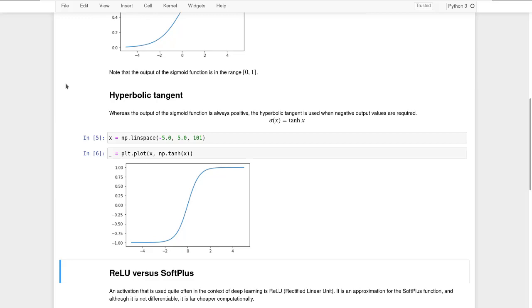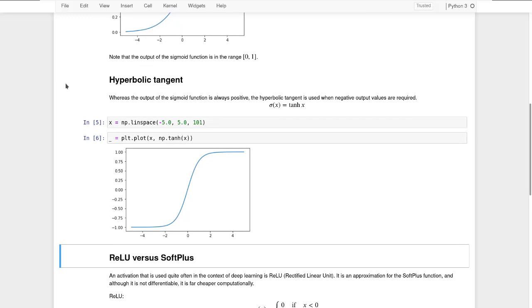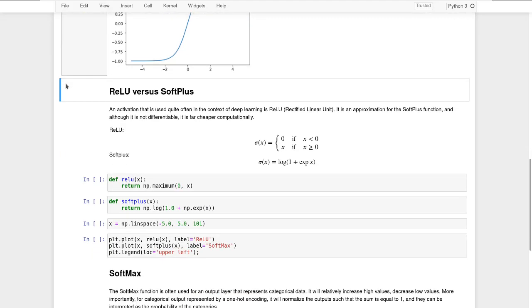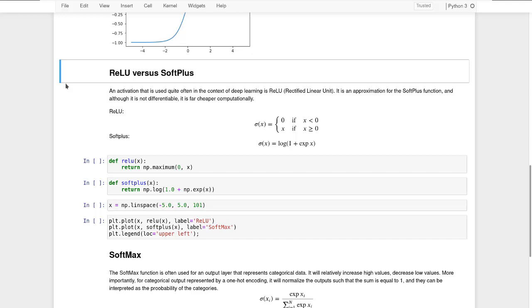These were commonly used in older literature. However, nowadays, the ReLU function is pretty popular. So that stands for Rectified Linear Unit. And you can see its definition here. So essentially, it is 0 for negative values of x, and it is simply x for values which are positive. Very often, it is used as an approximation for the soft plus function. So the soft plus function has similar behavior. It tends to 0 for negative values, and it is approximately linear for large values of x.